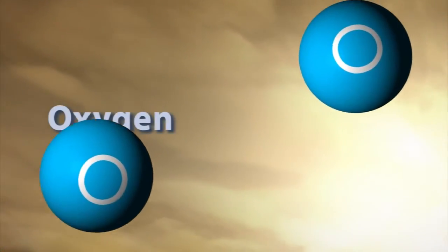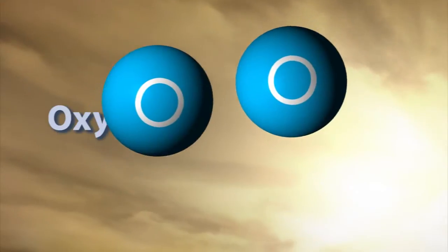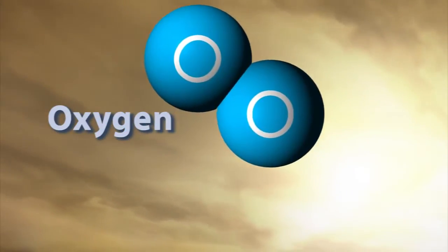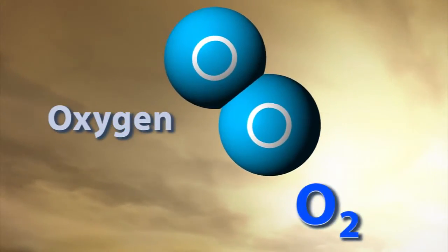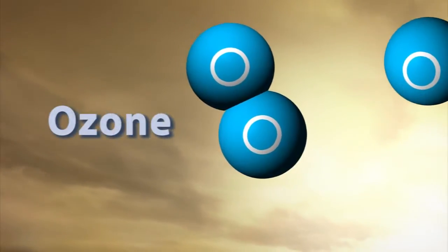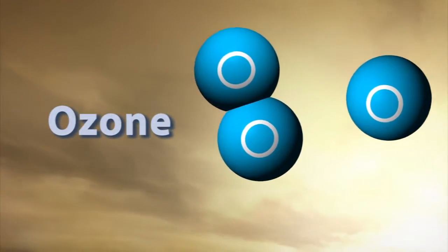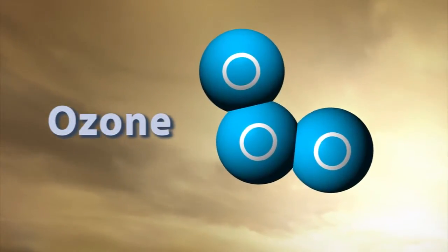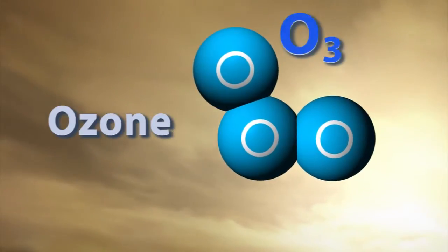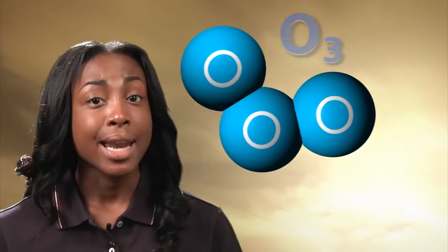The oxygen we breathe is actually a molecule made up of two oxygen atoms, so its molecular formula is O2. Ozone is an unstable and reactive form of oxygen made up of three oxygen atoms, so its molecular formula is O3. That difference of one oxygen atom might seem insignificant, but it's actually a huge deal.